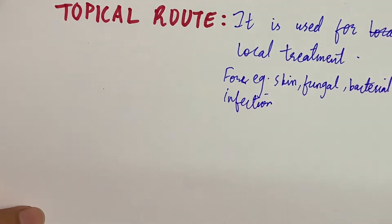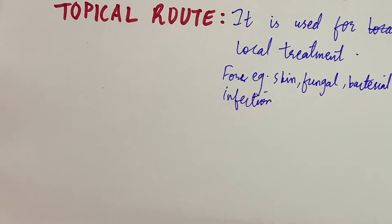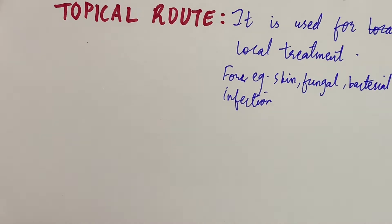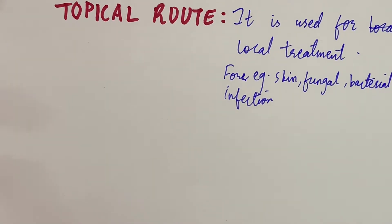For example, if we have a rash, we will put a cream or an ointment — that is the topical route. Similarly, if we use eye drops, because we are acting locally on an organ, that is also topical route. An inhaler used for asthma goes directly into the lung, so that is also topical route.